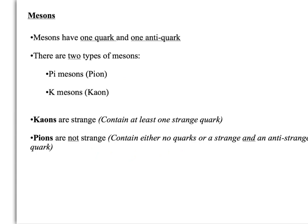Okay, so there are two types of meson. So there were two types of hadrons, and now we've got two types of mesons. We've got the pi mesons, which we usually shorten to pion. And we have k mesons, which we shorten to kaon. So both of these have a quark and an antiquark. But the key distinction is that kaons are strange. So that means they contain at least one strange quark. So you might have an up and a strange, or a down and an anti-strange, for instance. But they always contain a strange quark.